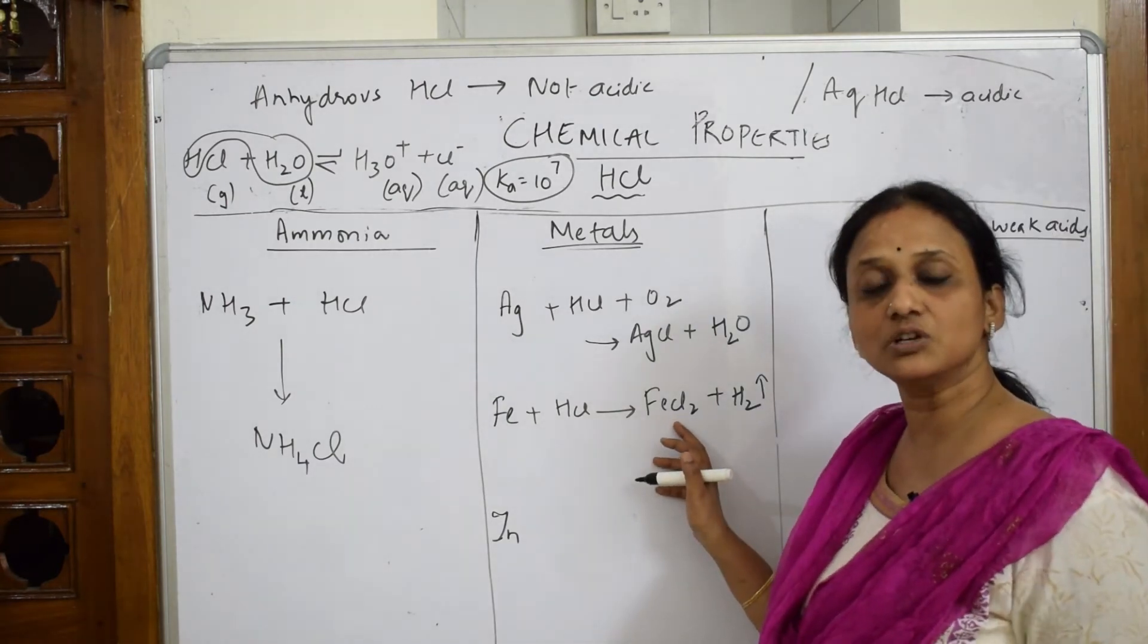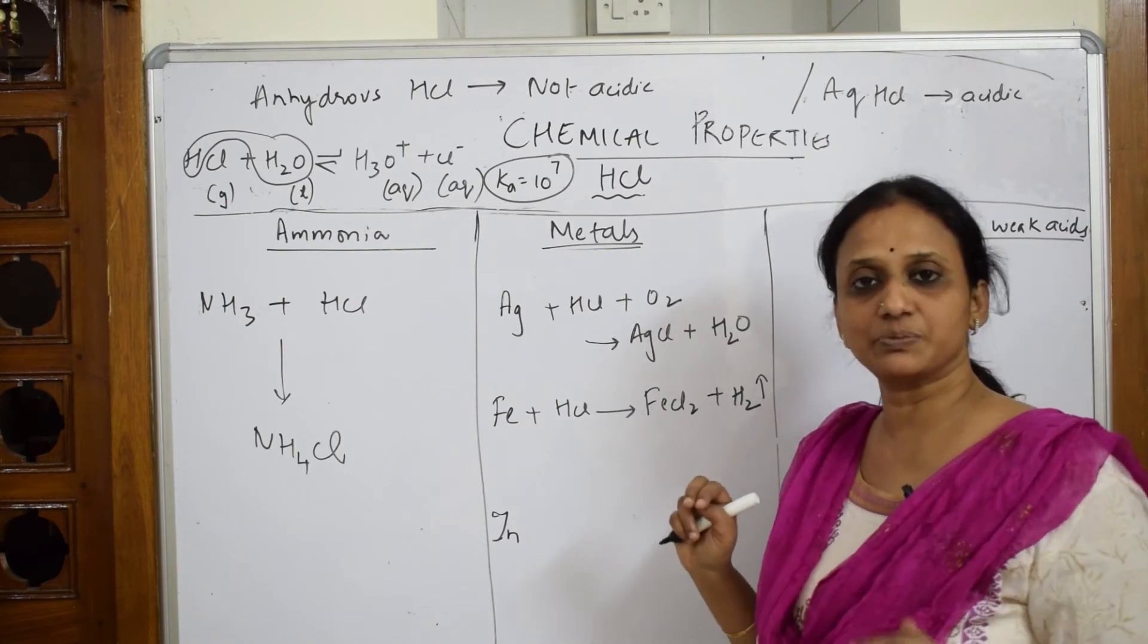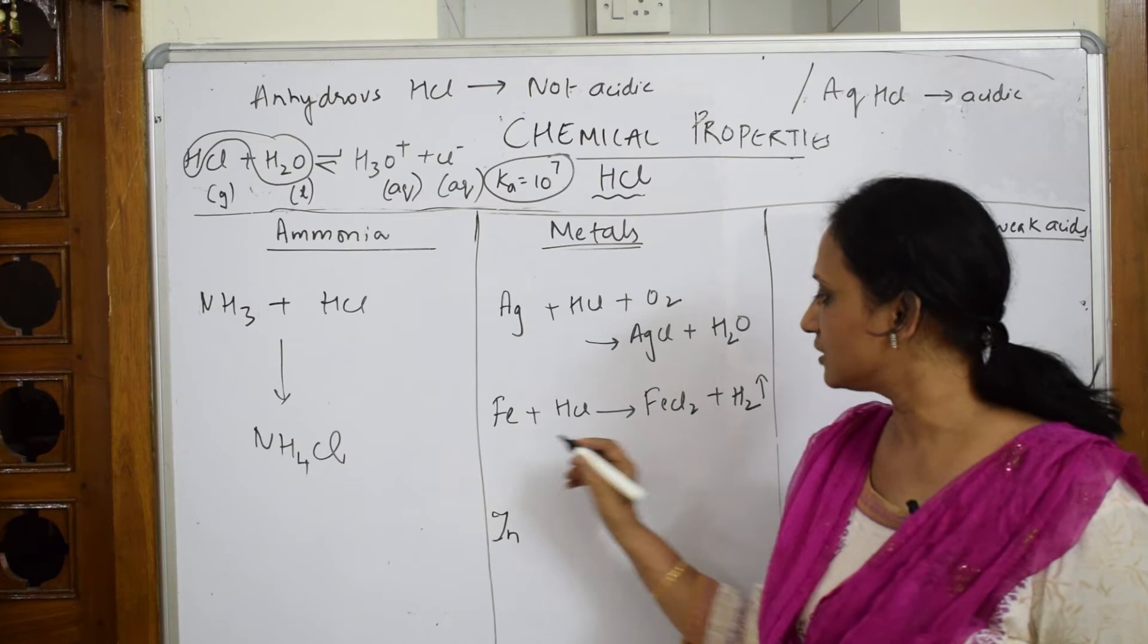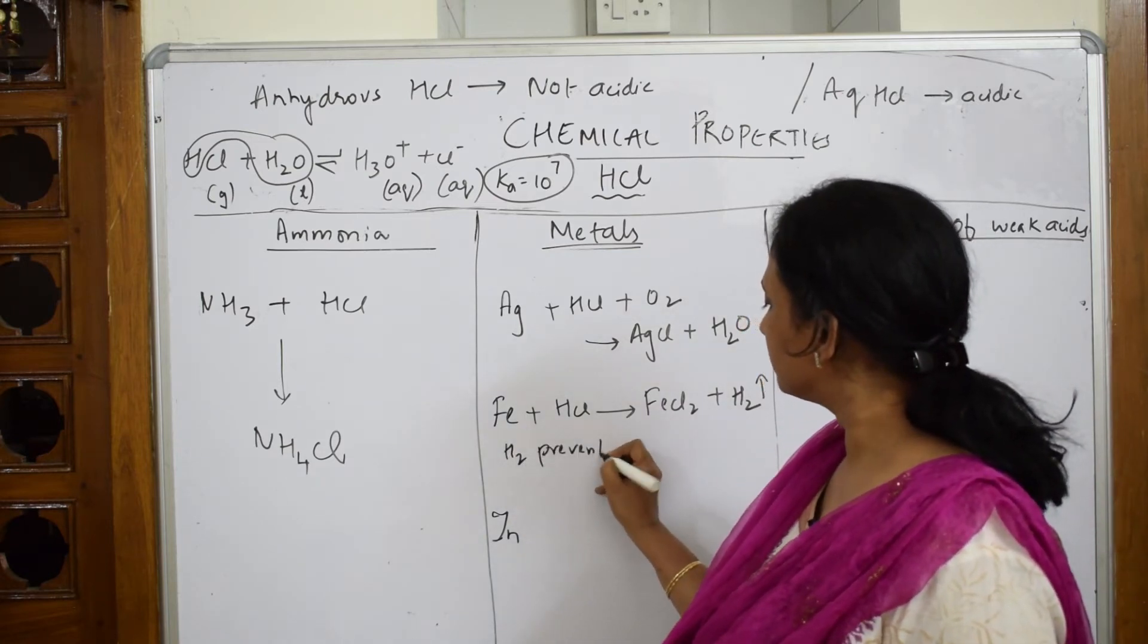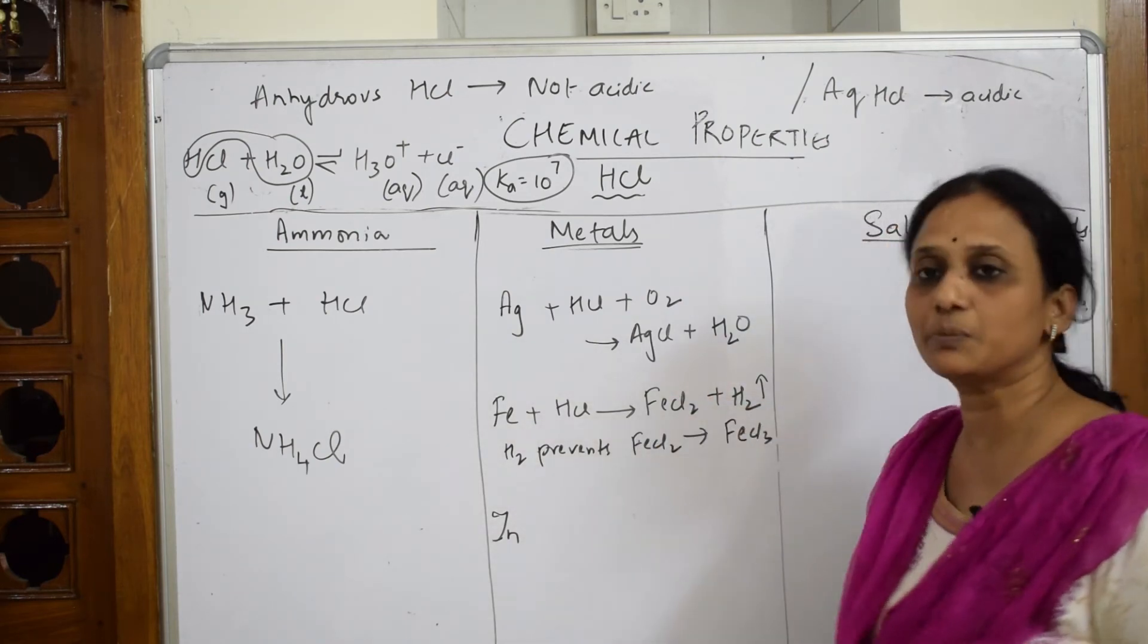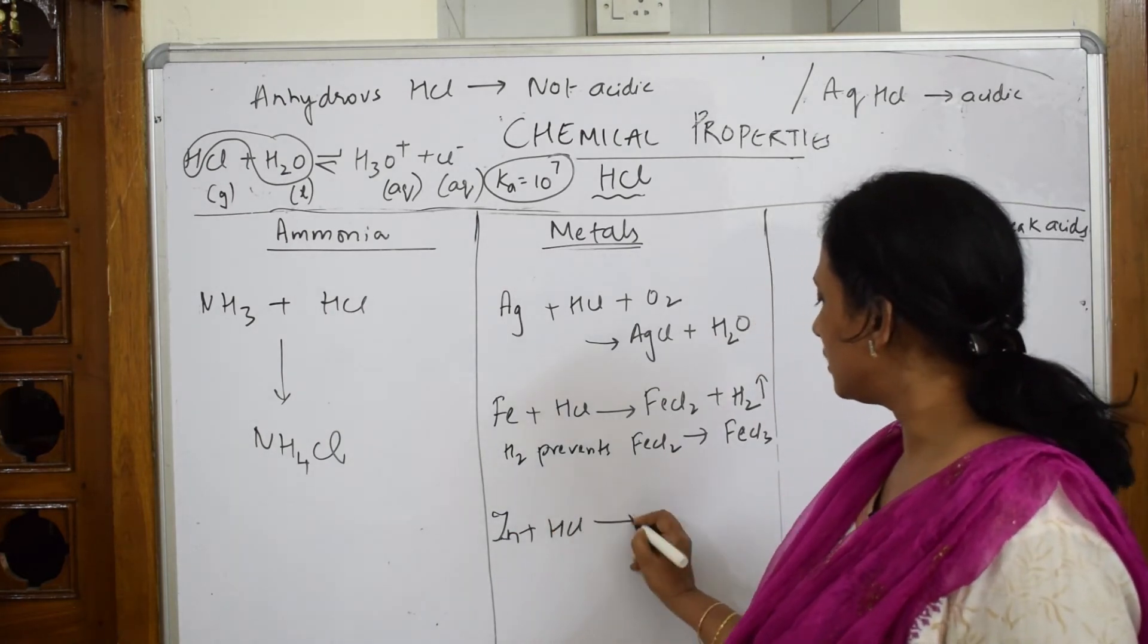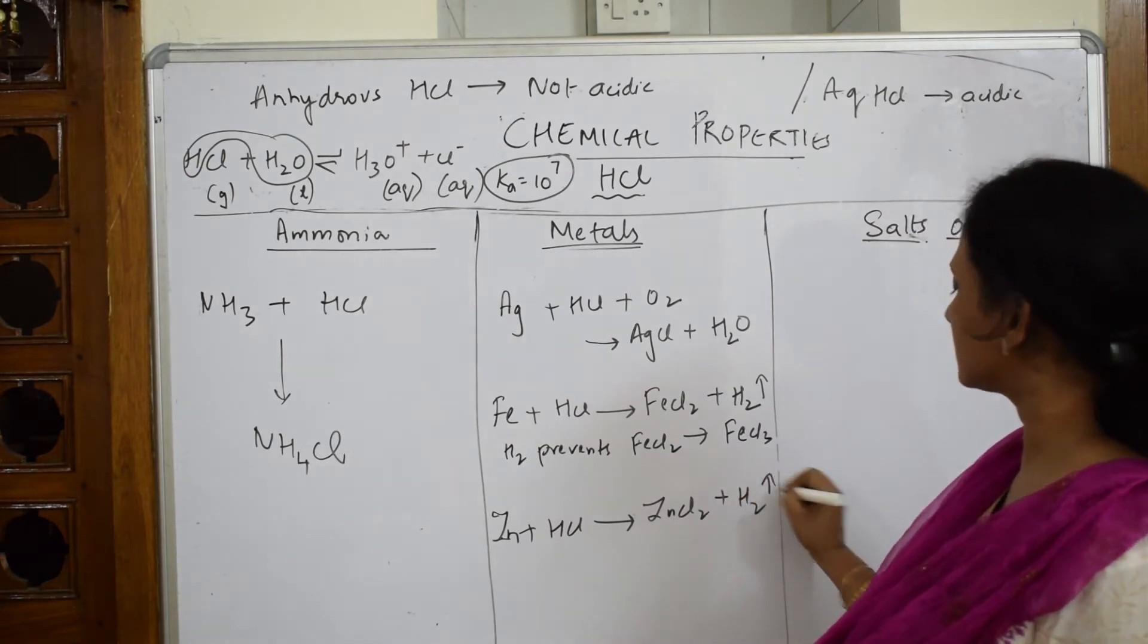Metal plus acid gives me hydrogen gas, but here instead of forming FeCl3 it forms FeCl2 because this hydrogen will prevent the formation of FeCl3. You can write hydrogen prevents conversion of FeCl2 to FeCl3. When I take zinc and add HCl, I get salt plus hydrogen gas, simple.